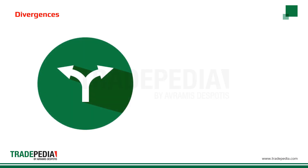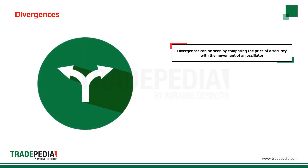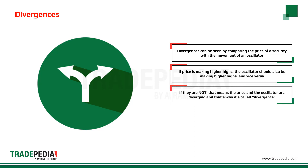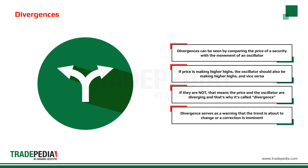The third way of analyzing oscillators is through divergences. Divergences can be seen by comparing the price of a security with the movement of an oscillator. If price is making higher highs, the oscillator should also be making higher highs, and vice versa. If they are not, that means the price and the oscillator are diverging — and that's why it's called divergence. Divergence serves as a warning that the trend is about to change or a correction is imminent.